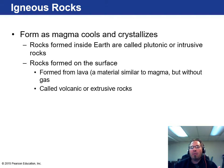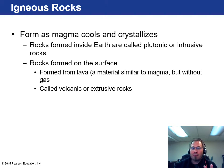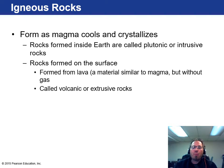They have Hawaiian names — there's aa, which is the real blocky stuff, and then you have pahoehoe, which is the ropey type of texture.